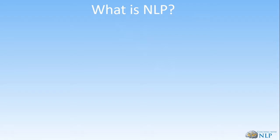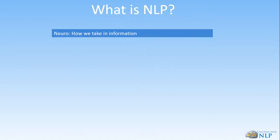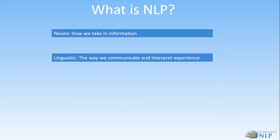On page 51 we've got the definition of NLP — this is your very standard generic definition. So it says: Neuro, which is the nervous system or the mind through which experience is processed by our five senses. Really it's how we take in information through VACOG, which simply means how we take in information through our Visual, Auditory, Kinesthetic, Olfactory, and Gustatory senses.